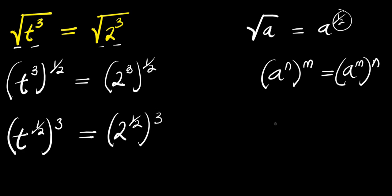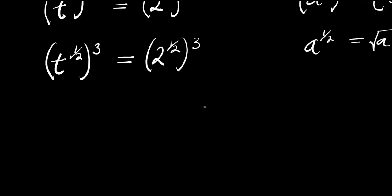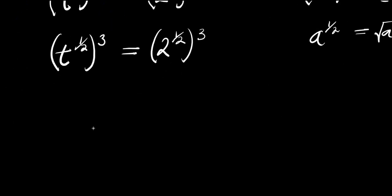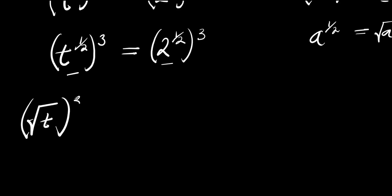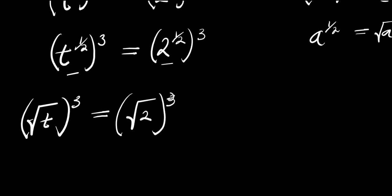Also remember that a power 1 over 2 is the same as the square root of a — converting the fractional exponent back to radical form. So applying that here, we have square root of t raised to the power of 3, and this equals square root of 2 raised to the power of 3.